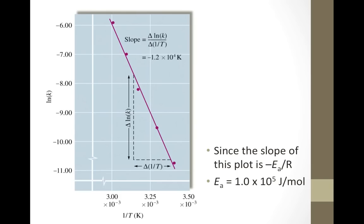The slope of this line is negative 1.2 times 10 to the fourth Kelvin. Since the slope-intercept form of the Arrhenius equation has slope equal to negative Ea over R, just by multiplying the slope by negative 8.314 joules per mole Kelvin, we determine the activation energy for the decomposition of dinitrogen pentoxide to be 1.0 times 10 to the fifth joules per mole.